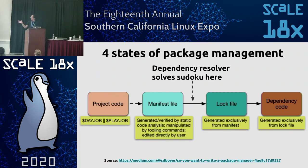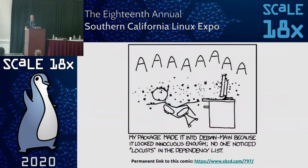From the lock file, you have the exact list of packages and dependency versions needed to install into your vendor directory, however that's cached on your system.